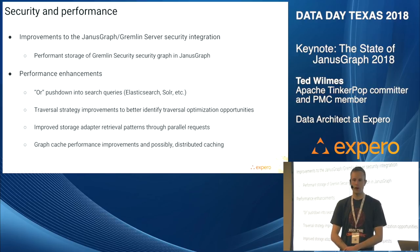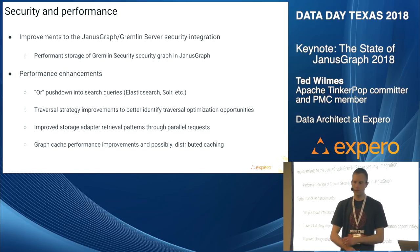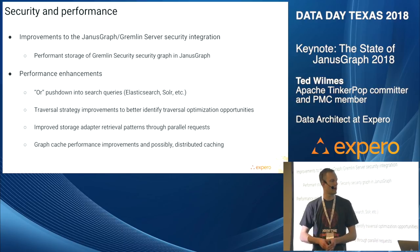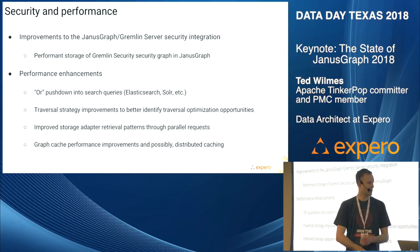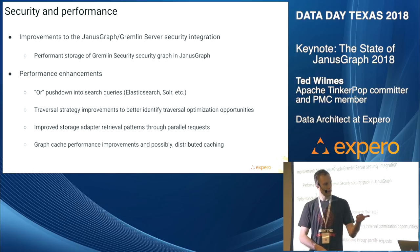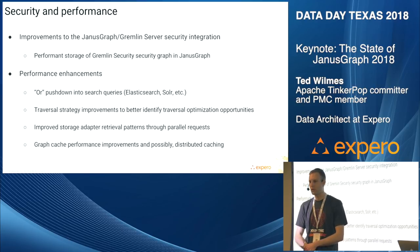There are other performance opportunities where we'll look for patterns in queries and optimize them. A big area is improved storage adapter retrieval patterns — making storage adapters retrieve data in parallel for Gremlin queries. For Cassandra or Scylla, the best way to retrieve large amounts of data is usually not one big bulk request, but breaking it up into separate async queries and getting data back that way. We also have some work on the graph cache — there are a few different caching layers in Janus, and there's been talk of potentially plugging in a distributed caching option, since right now all caches are local to individual Janus instances and not kept in sync.